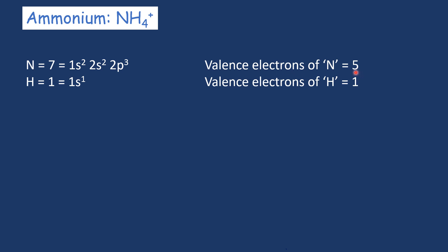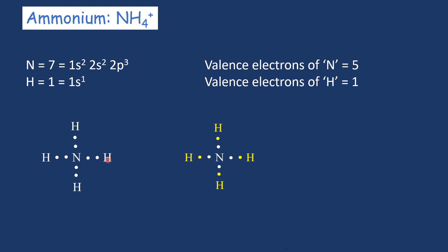To understand this better, let's look into the Lewis dot structure of ammonium. A covalent bond forms because of the sharing of electrons — one electron comes from one atom and another from the other atom. We can understand this better by putting some colors in. All the yellow electrons belong to hydrogen and the white electrons belong to nitrogen.